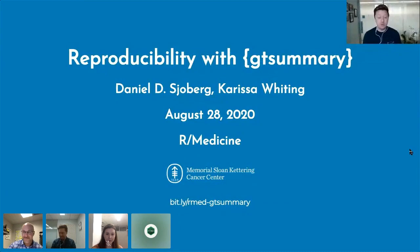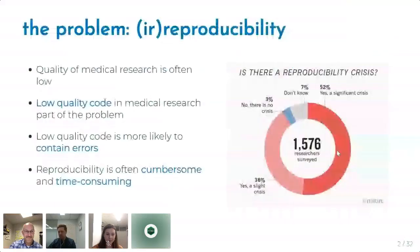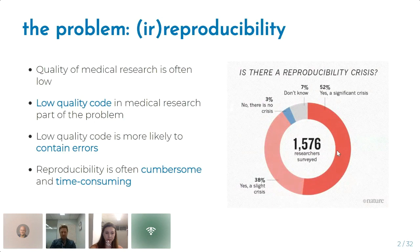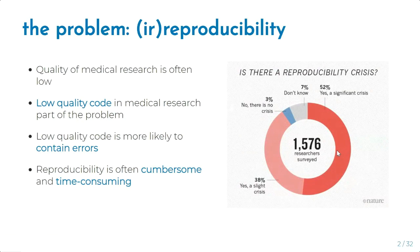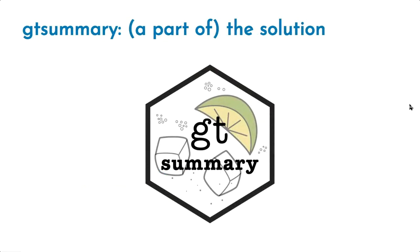We'll discuss how GT summary can help improve the reproducibility of your reports. There's been quite a bit of work on the reproducibility problem in medical research over the last few decades. One big game-changing development has been the R Markdown document — being able to integrate code along with report text has been incredibly valuable. However, there's always been a gap: after creating Markdown reports, many tables still need tweaking by hand. We wanted to make it possible to have a 100% reproducible workflow using R Markdown that required absolutely no tweaking, which led us to create GT summary.